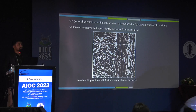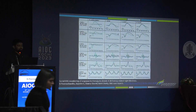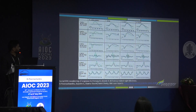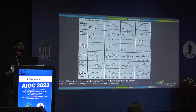The patient underwent extensive workup to identify the cause of malabsorption. Finally, an intestinal biopsy showed intestinal abetalipoproteinemia, which was the cause of vitamin A malabsorption. The ERG was repeated at one week, one month, and two months after vitamin A supplementation. Just one week after supplementation the waveform was almost becoming normal, and at two months the ERG was normal. This is where ERG is very important — without electrophysiology we would miss these cases, and the underlying disease could be life-threatening.